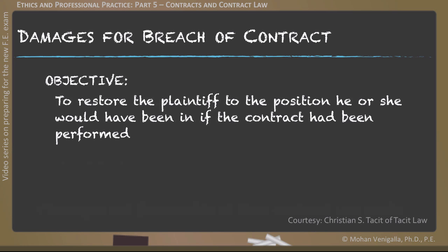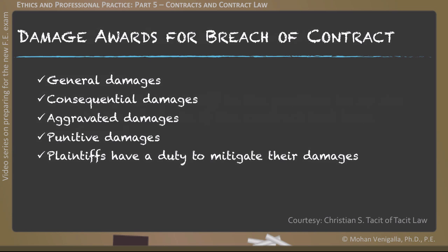When a breach of contract did in fact happen, the primary objective of the law in determining damages is to restore the plaintiff to the position he or she would have been in if the contract had been performed. There are four types of damage awards: general, consequential, aggravated, and punitive damages. In all four cases, plaintiffs have a duty to mitigate their damages. General damages are compensation for actual losses suffered that are a direct result of the breach of contract and were in contemplation of the parties when the contract was formed. Consequential damages are compensation for damages that, although not naturally flowing from the breach, were within the contemplation of the parties when the contract was formed.